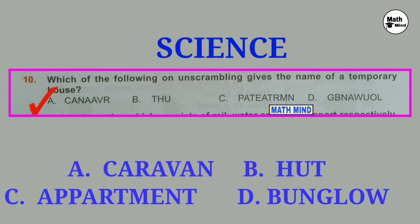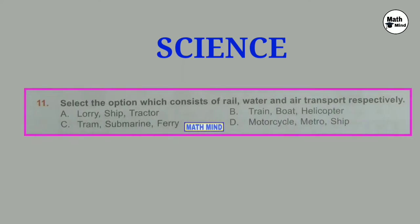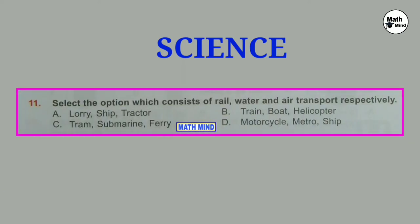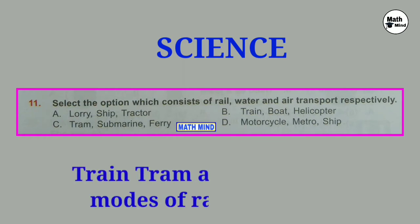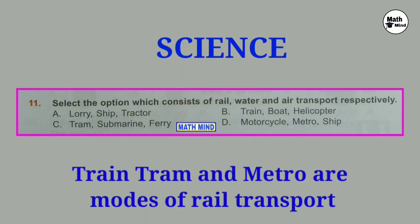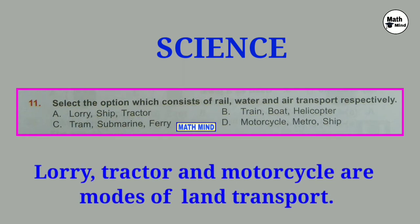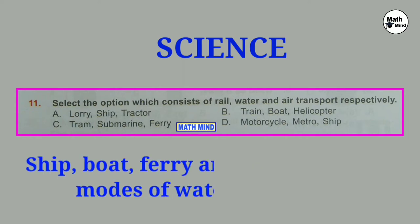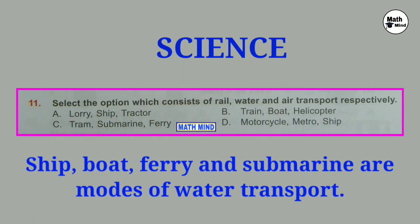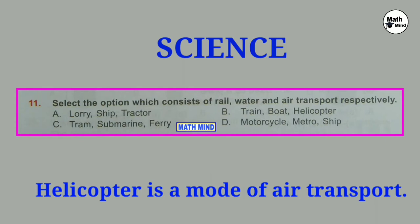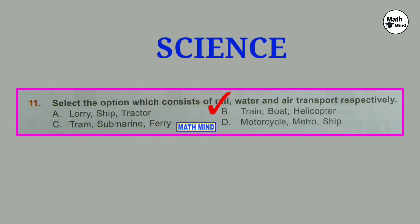People who are moving from place to place use a caravan. Question number 11: Select the option which consists of rail, water and air transport respectively. Train, tram and metro are modes of rail transport. Lorry, tractor, motorcycle are modes of land transport. Ship, boat, ferry and submarine are modes of water transport. Helicopter is a mode of air transport. Correct option is B: Train for rail transport, boat for water transport, and helicopter for air transport.